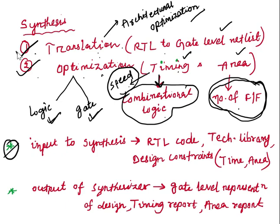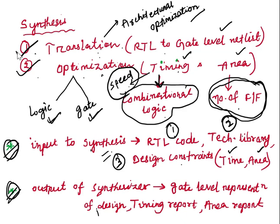The inputs to synthesis are: (1) RTL code, (2) technology library, and (3) design constraints — timing or area constraints. The outputs of synthesis are: (1) gate-level representation of the design, (2) timing report — since all cells have timing information, and (3) area report. These concepts are commonly asked during interviews.